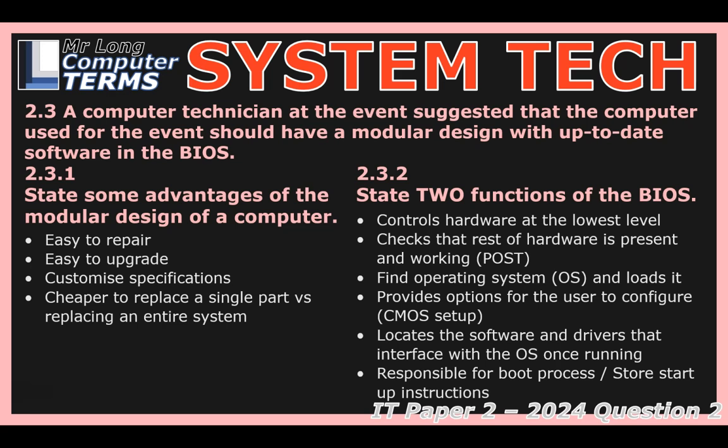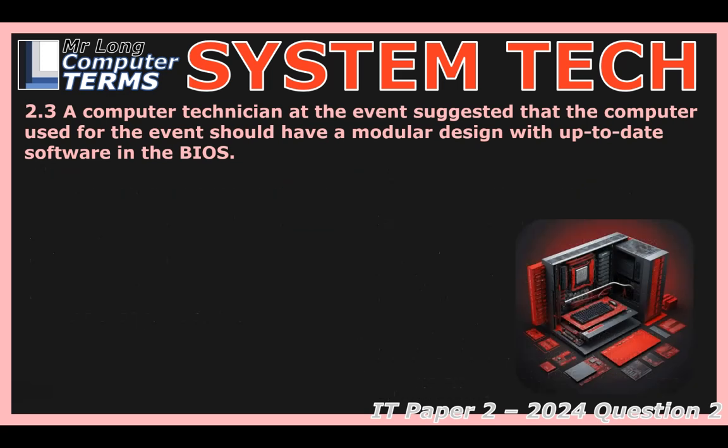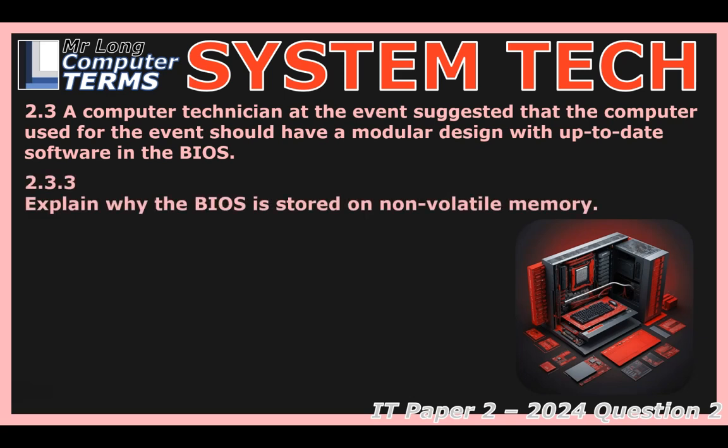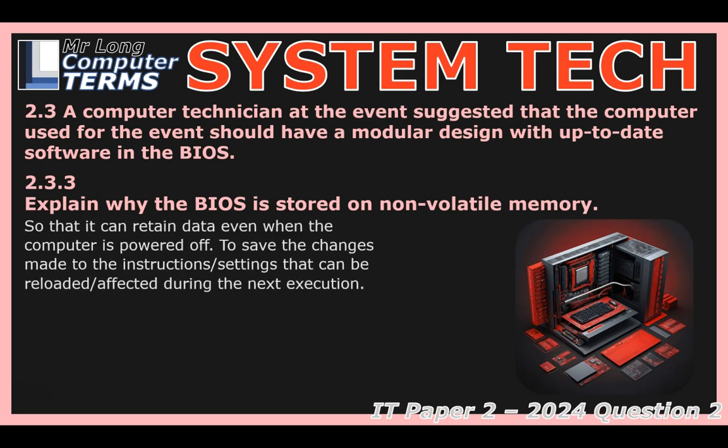Why does the BIOS have to be on non-volatile memory, rather than just loading into RAM like other programs? It's stored on non-volatile memory — typically a special chip like ROM or flash memory — because non-volatile means it keeps its data even when the power is off. The BIOS holds the very first instructions the computer needs to start up. If those instructions were in RAM, they'd disappear the moment you turned the computer off, and next time you powered on it would have no idea what to do.